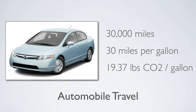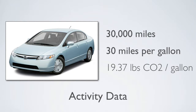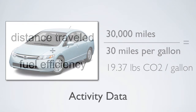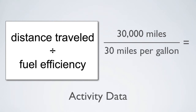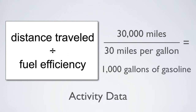Based on this information, how much CO2 is emitted? In this example, the activity data is the distance traveled and the vehicle's fuel efficiency. But the ultimate piece of information needed is the gallons of gasoline consumed. We can calculate this by dividing the distance traveled by the fuel efficiency of the vehicle. So, 30,000 miles divided by 30 miles per gallon equals 1,000 gallons of gasoline.